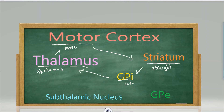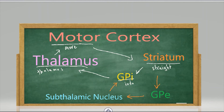Now for the indirect pathway, which is the inhibitory — indirect is for inhibitory, both start with 'I' — so remember the inhibitory is the indirect pathway. Instead of going from the striatum to the globus pallidus internus, it goes to the externus, and from there to the subthalamic nucleus, and from there to the globus pallidus internus.